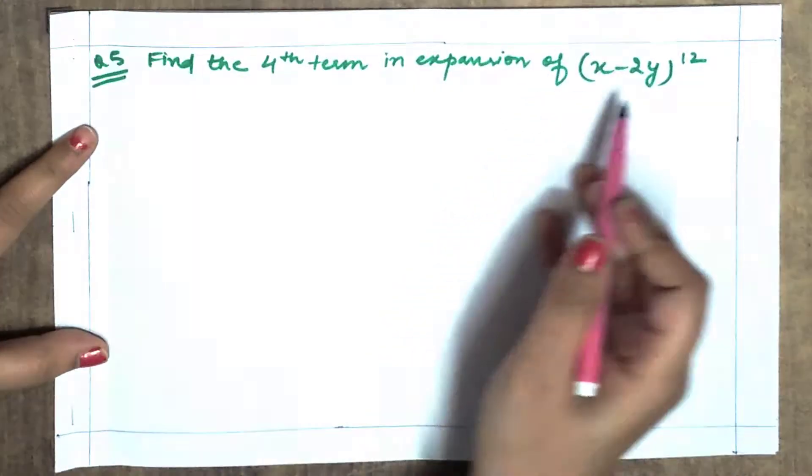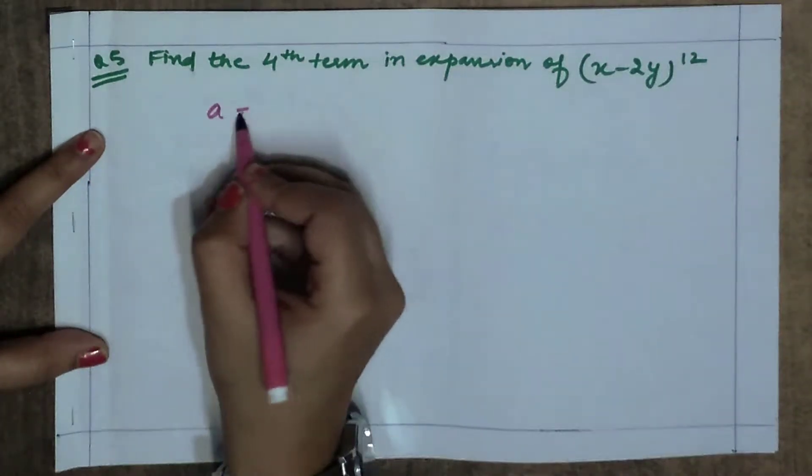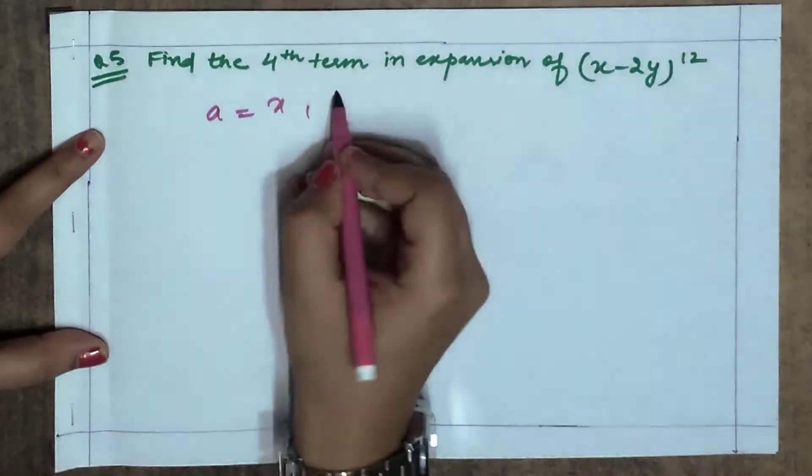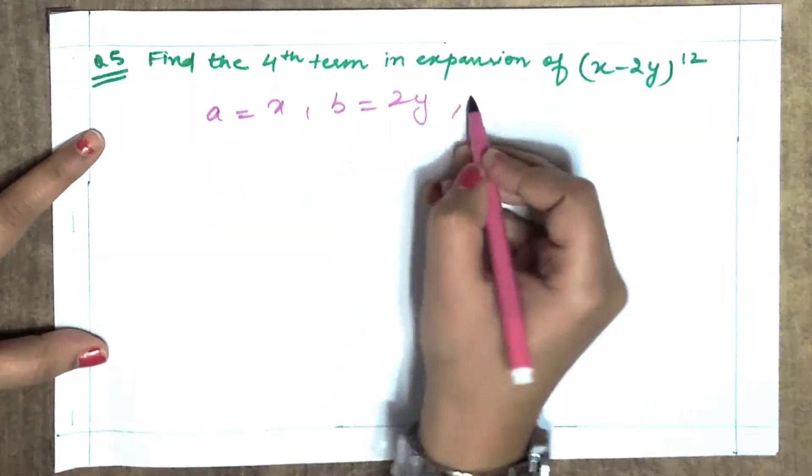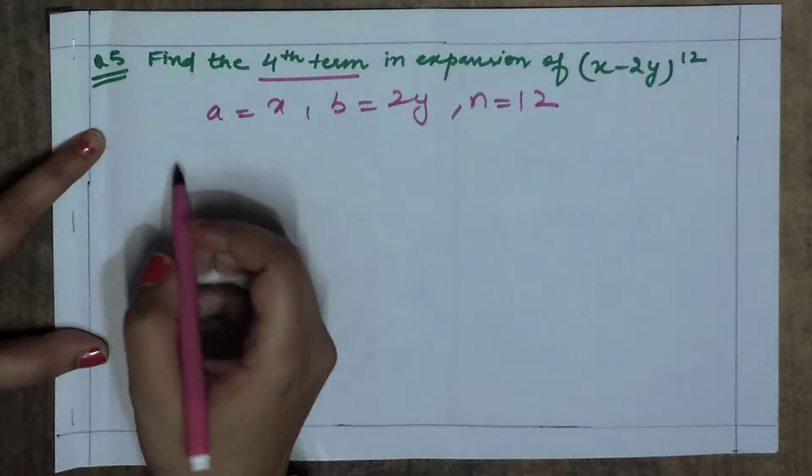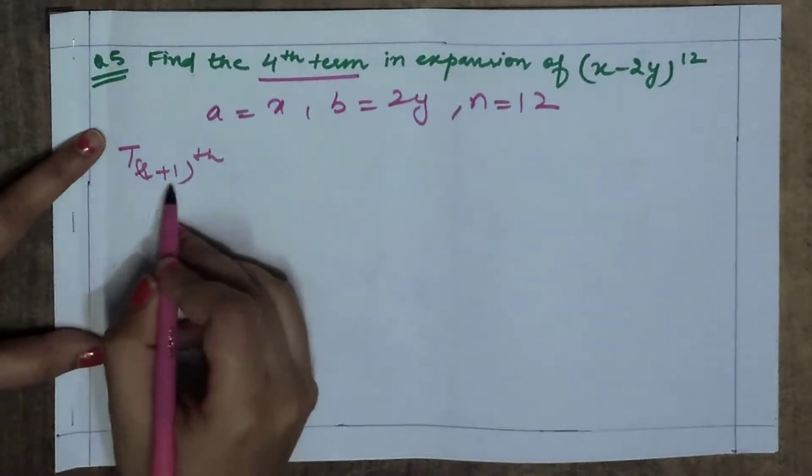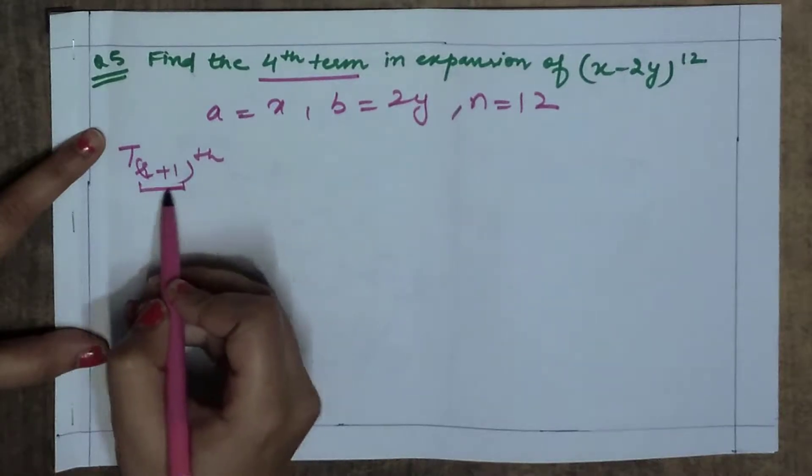Find the 4th term in the expansion. You have given the expansion. What is your a value? x. What is your b value? 2y. What is your n value? 12. Fourth term - when we talk about term, you know the formula: r plus 1th term.